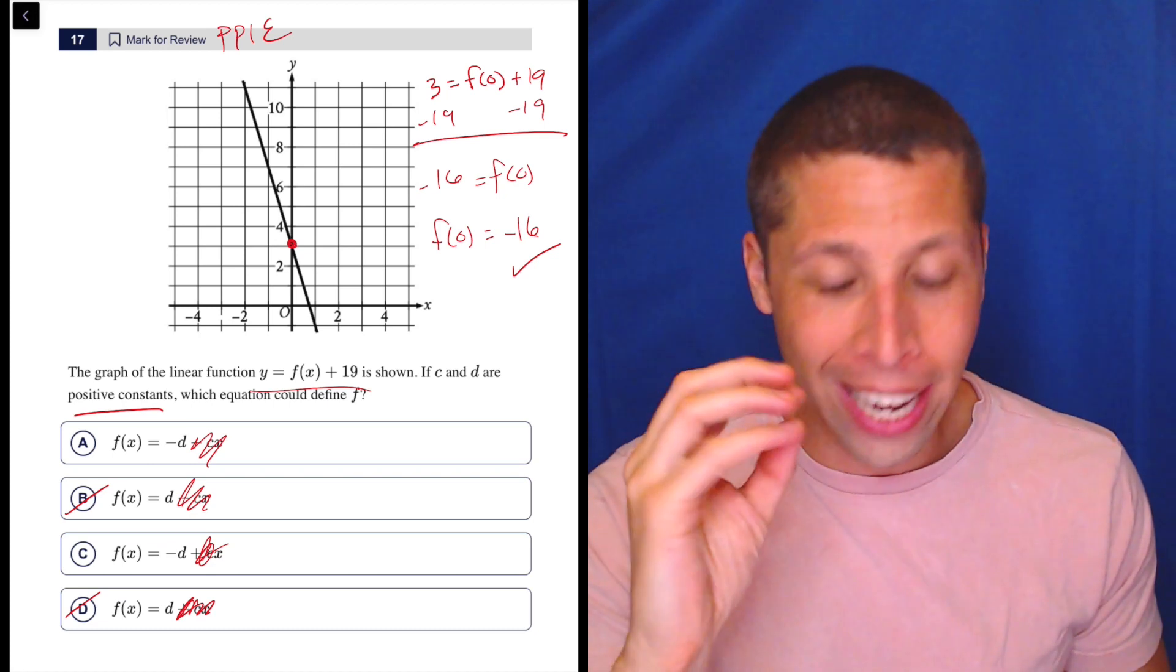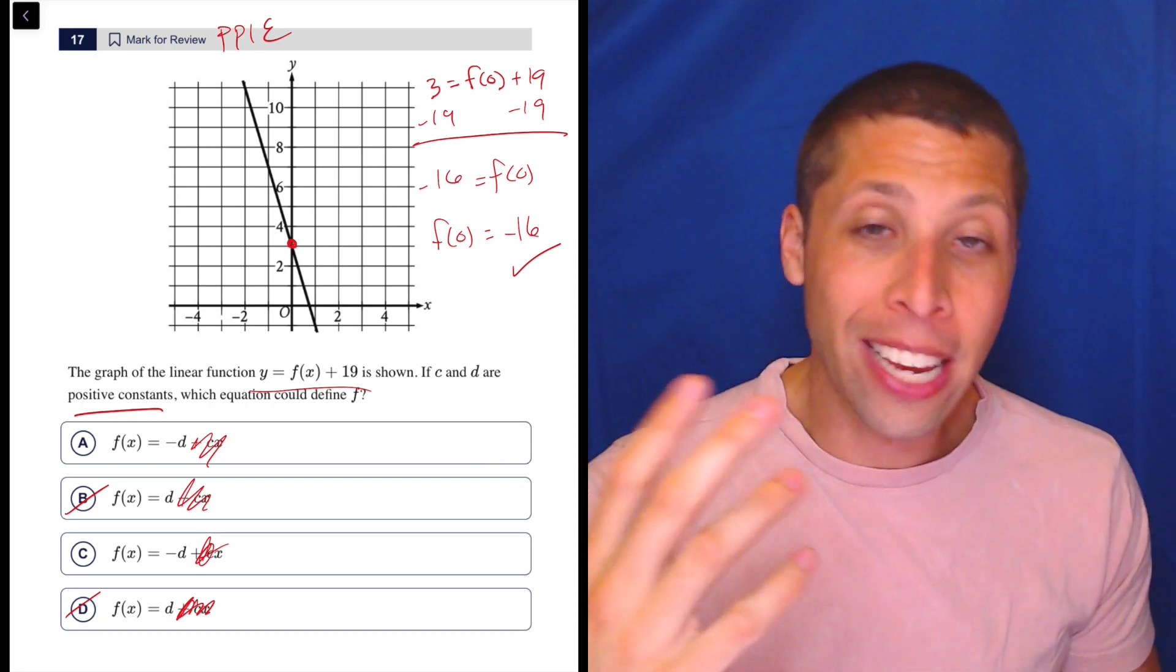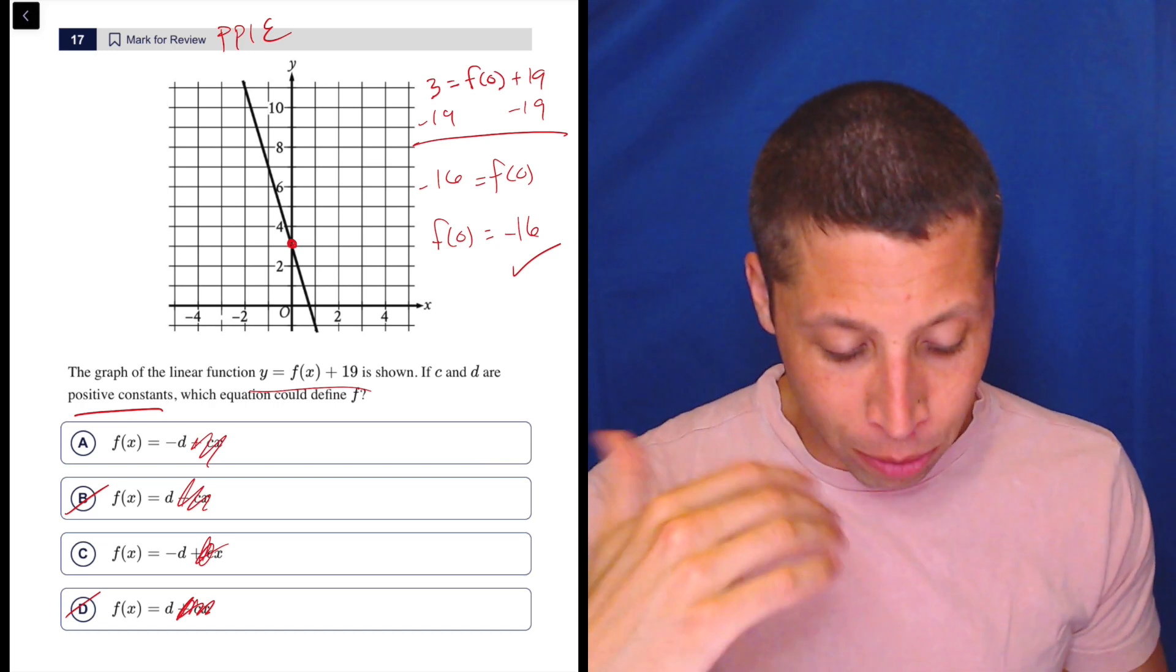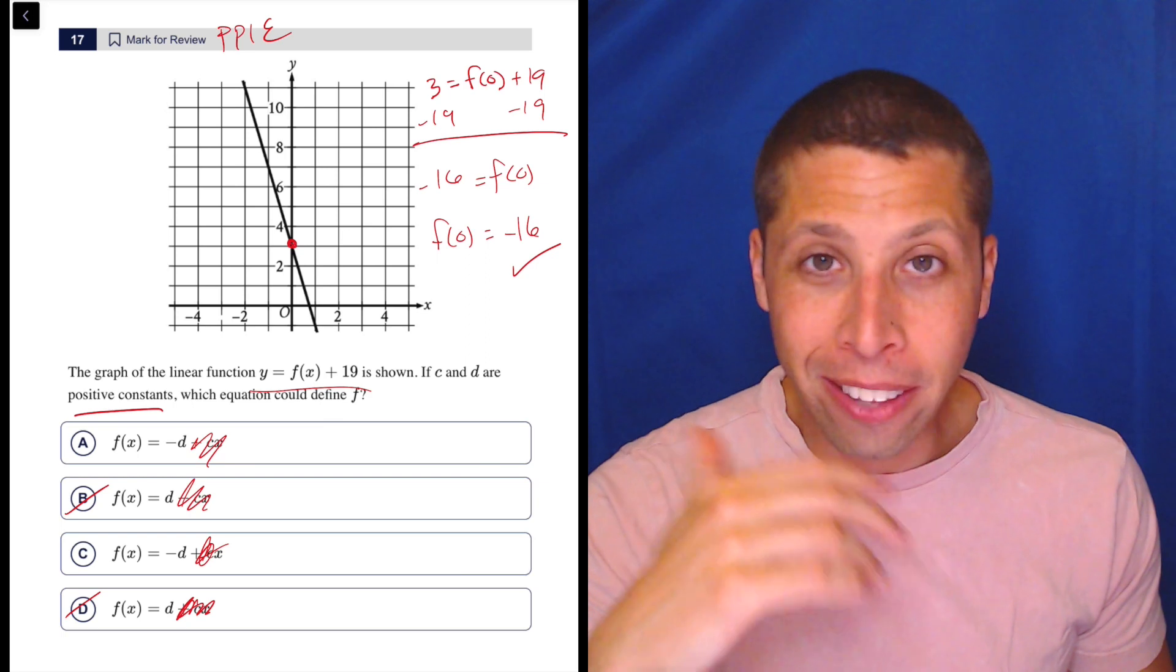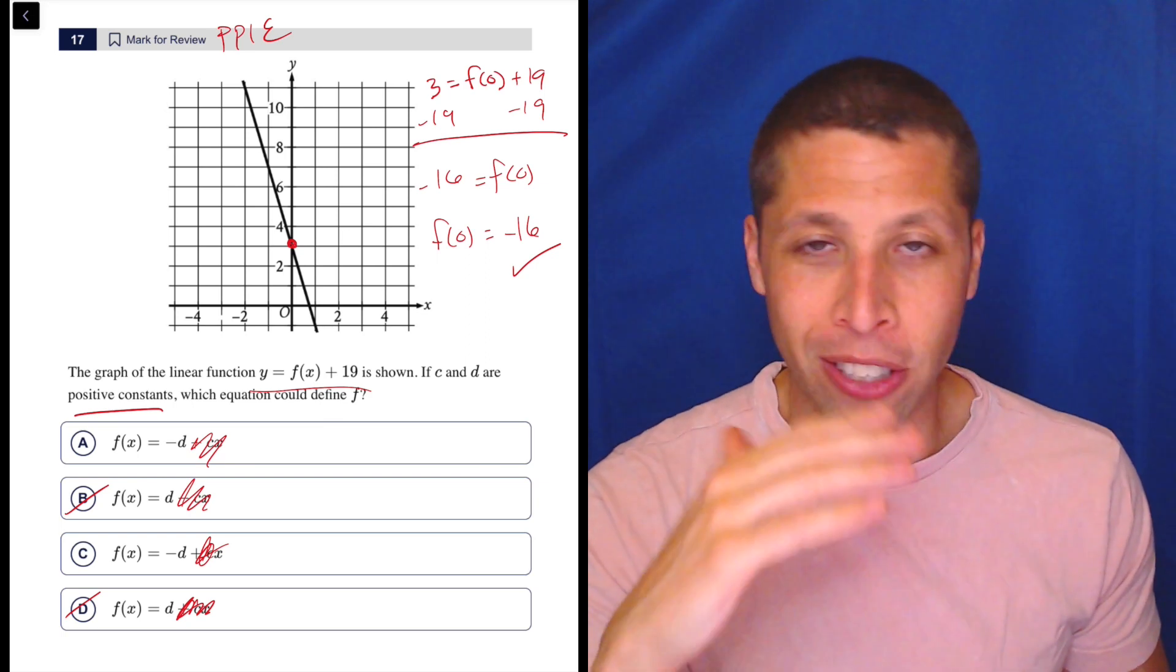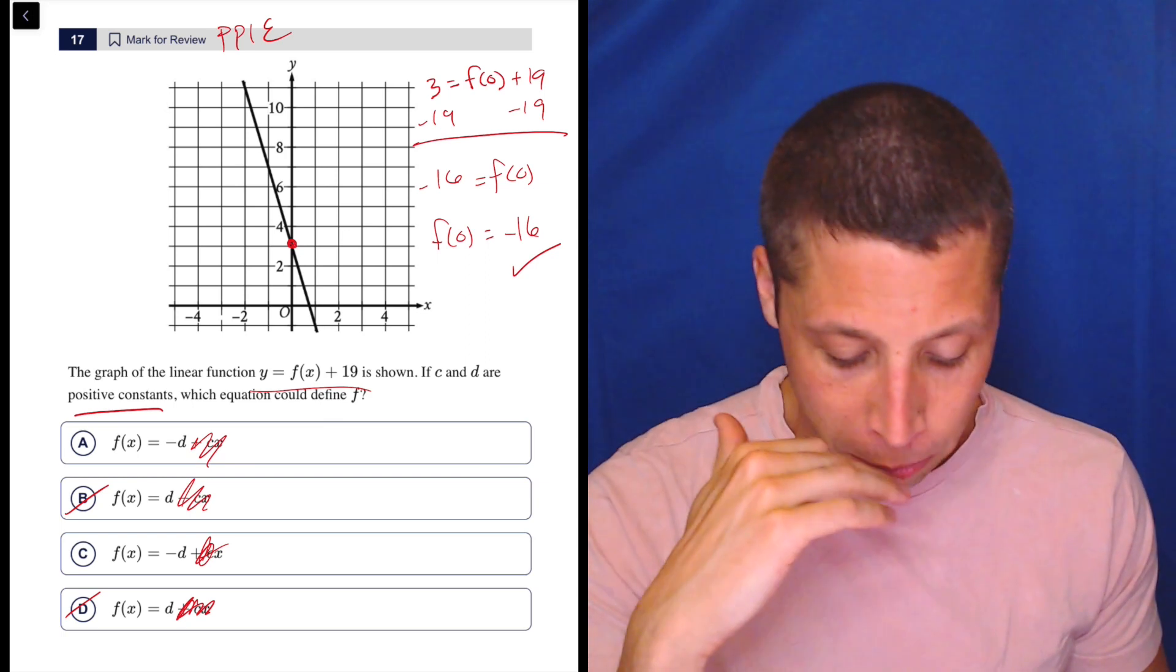This is so annoying. I hate this. They're messing with us because in this case we want a negative number, which is good, but the fact that C and D are positive constants just kind of messes with me a little bit.